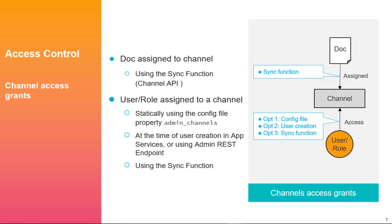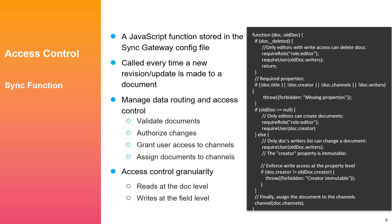Access assignments are made in the Sync Gateway configuration file within the Sync function. Users need to be provided access to a given channel or group of channels via the admin channel's configuration setting during user creation or via updates to the Sync function. Once users have been granted access to channels, you use the JavaScript-based Sync function to ensure that channel permissions are followed to allow or reject access.